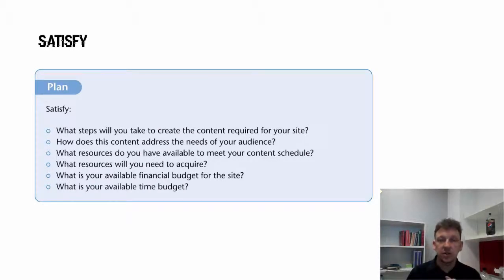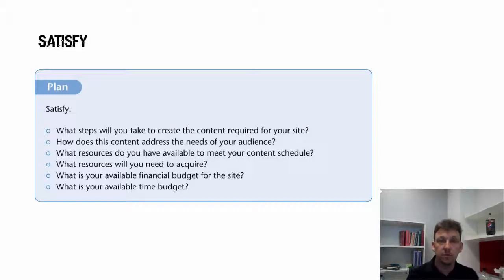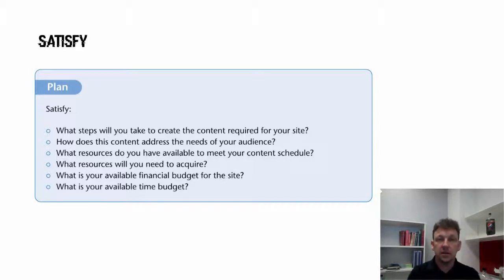For satisfy: what do you need to do to make the content the audience wants? How, using SIVA or 4Ps, does that content address what the audience is looking for? What are your resources? What have you got that lets you do and lets you create and lets you build those products and those solutions?